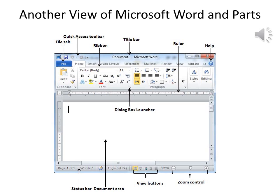Slide 7 shows another view — your version may look slightly different. Instead of an Office button you may have a File tab; both buttons are exactly the same, just a different version. This is the 2007 version, whereas the previous slide shows the 2010 or 2013 version. If the previous slide didn't quite match what you have, this one should look more familiar. Compare it to what you have and to the previous slide.